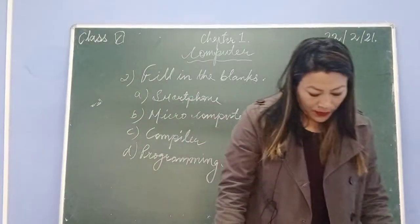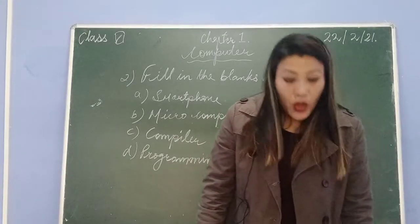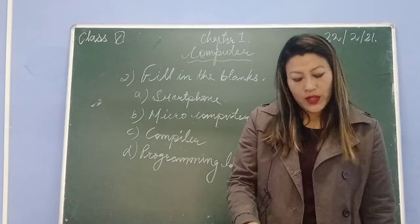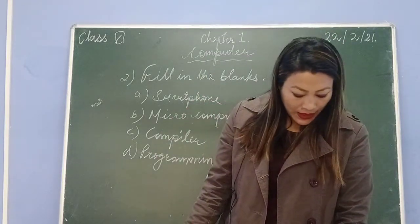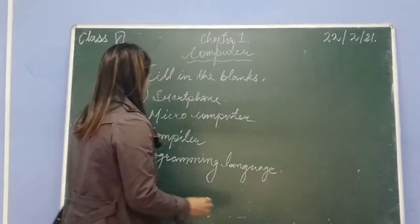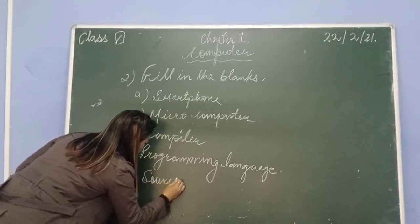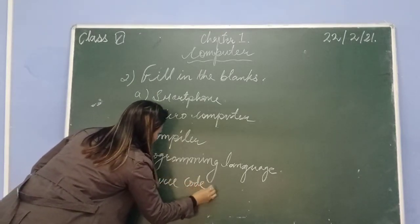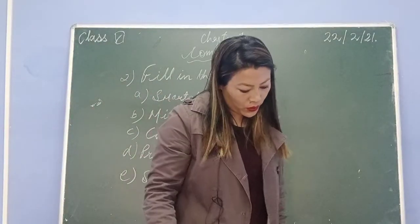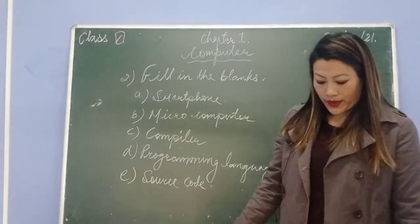And number five: assembly language uses very short words for commands known as dash to give instructions to the computer. We have already discussed this - assembly language uses mnemonic codes, so your answer will be source code. Please note down the fill in the blanks answers in your computer exercise copy.